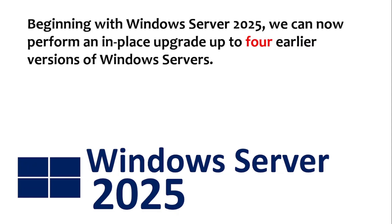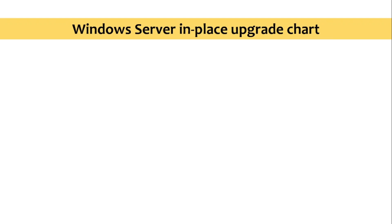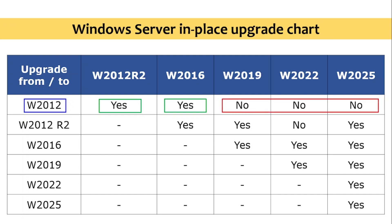Beginning with Windows Server 2025, we can now perform an in-place upgrade from up to four earlier versions of Windows Server. We can perform an in-place upgrade to Windows Server 2025 right from Windows Server 2012 R2 and later. Let's look at the Windows Server in-place upgrade chart. Starting with 2012, we can perform an in-place upgrade from 2012 to 2012 R2 and 2016, but we won't be able to perform an in-place upgrade to 2019, 2022, or 2025 from 2012.